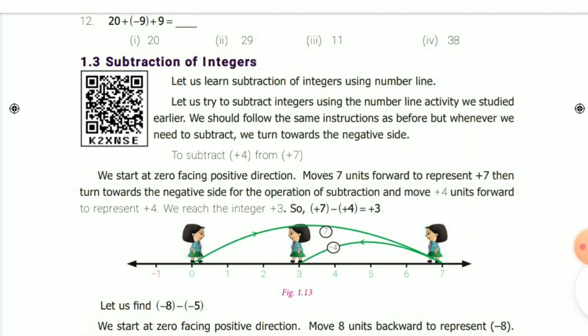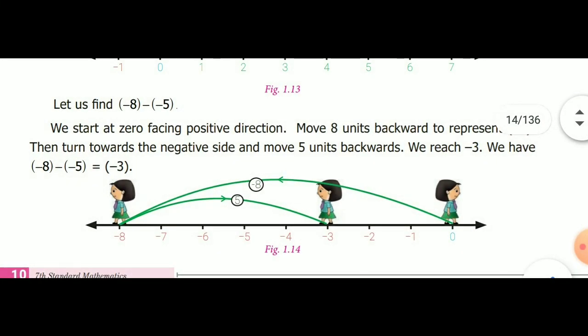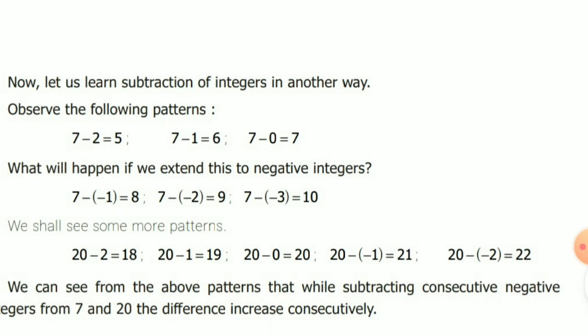We get 3, so 7 minus 4 equals 3. Next, subtract minus 5 from minus 8. Both are negative numbers, so we draw the number line on the negative side. The greatest number is minus 8, so mark minus 8 from 0. Then subtract minus 5 by moving 5 steps: 1, 2, 3, 4, 5. The answer is minus 3.